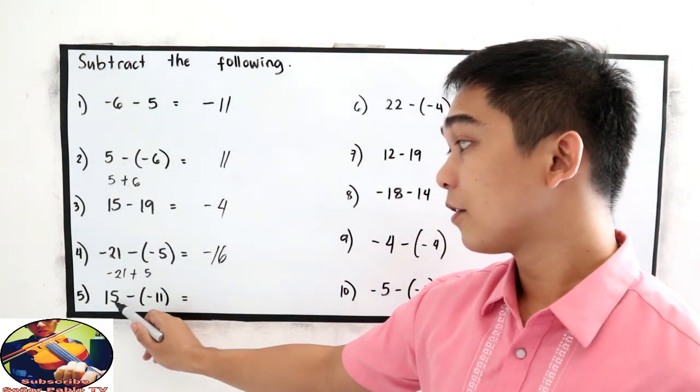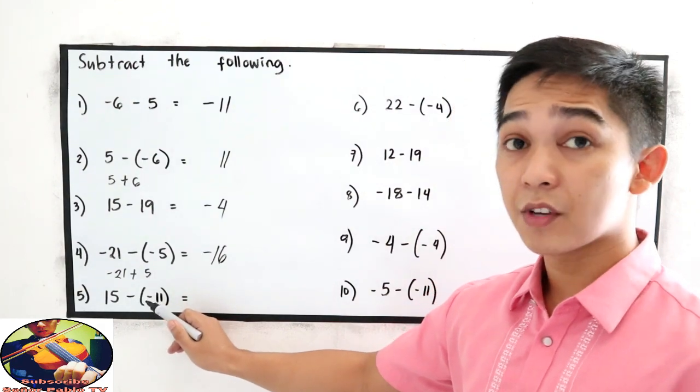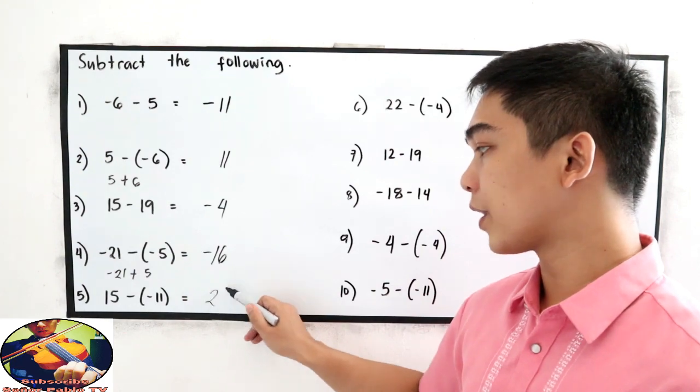This will become 15 plus 11, why plus? Negative times negative is positive. So 15 plus 11, 26.